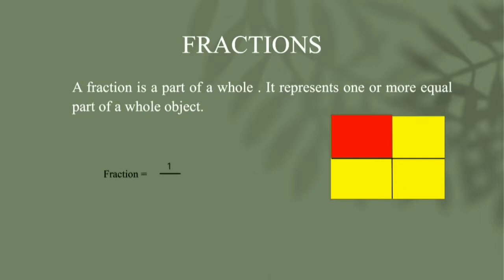1 is the red color box. The total rectangle box parts is 4. So we can denote it as 1 by 4. Look at the fraction — the number above the line is the numerator, and the number below the bar is the denominator.